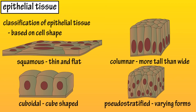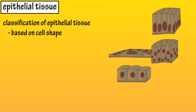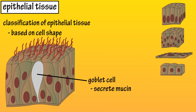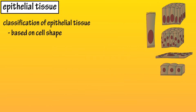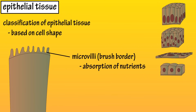Pseudostratified cells, as you can see here, have varying heights, as not all of them reach the apical or top surface, but they all do connect to the basement membrane. Some epithelial cells may contain goblet cells, which secrete mucin, which forms mucus that helps with lubrication and protection. Some cells have extensions called cilia, which are sensory organs and also provide movement of mucus away from the lungs and toward the mouth. And some epithelial cells have tiny finger-like projections called microvilli, which is often termed the brush border.